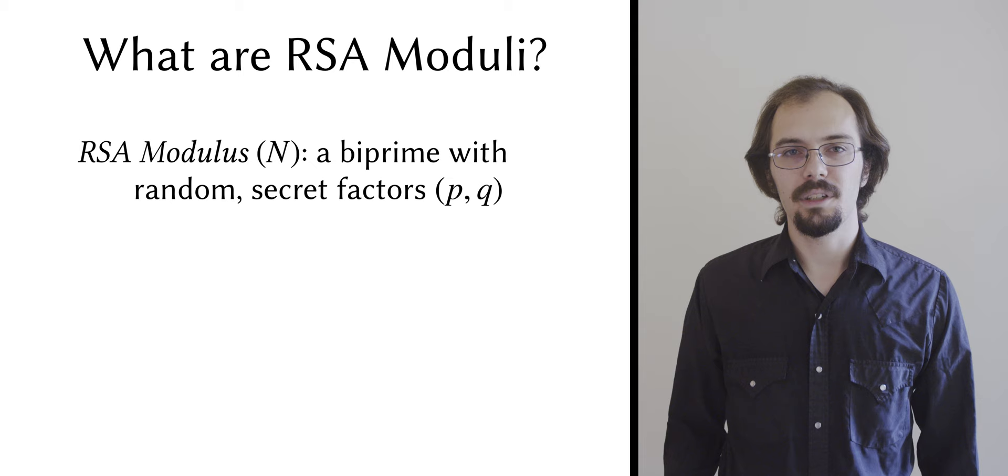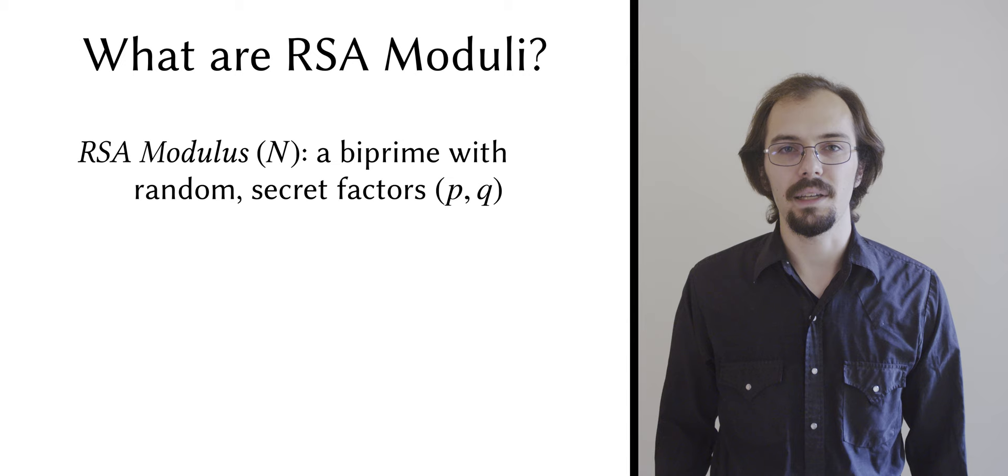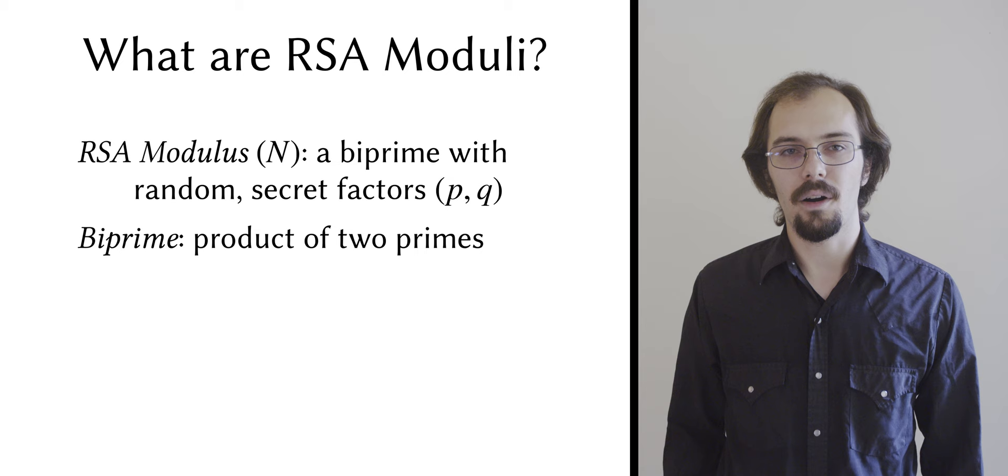An RSA modulus, usually designated by the variable n, is the product of two large randomly chosen primes, which we call p and q. We call such numbers bi-primes, and in this talk I will use the terms bi-prime and RSA modulus interchangeably.